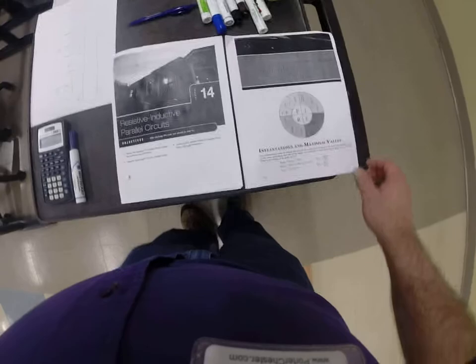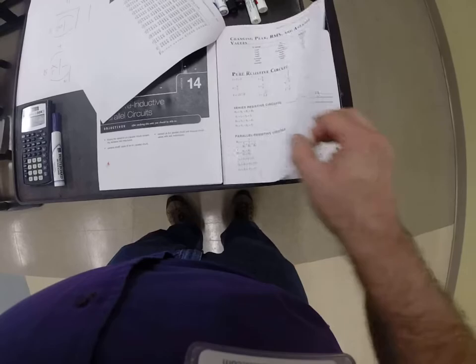Okay guys, this is Mr. Stark. This is what you're going to need to start with today. We're doing resistive inductive parallel circuits, so you'll need chapter 14 and you'll need the formulas that go with it. So, let's turn to the appropriate page.